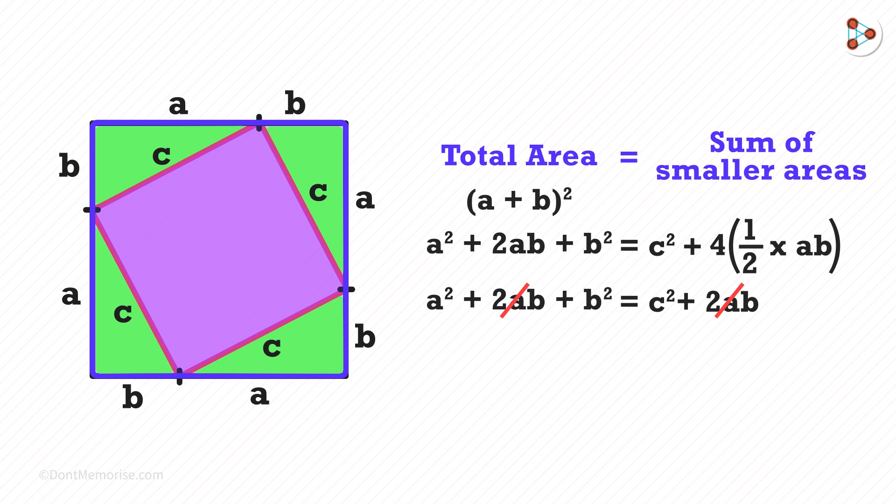When we equate them, 2ab gets cancelled and we get a² + b² = c². And that proves the Pythagoras theorem.